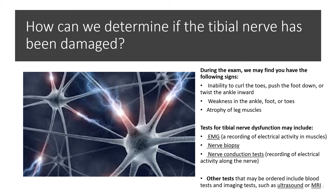How can we determine if the tibial nerve has been damaged? Based on a history and physical examination, we can typically see the inability of the patient to curl their toes, push down on the foot, or twist the ankle inwards. That weakness in the foot and ankle, as well as some atrophy in the leg muscles, gives a clue that the tibial nerve has been damaged. We can do further testing such as electromyography or EMG, a nerve biopsy, or a nerve conduction test to see the electrical activity of the nerve.